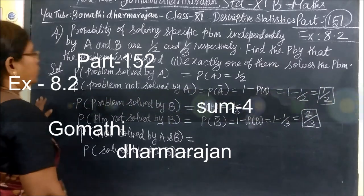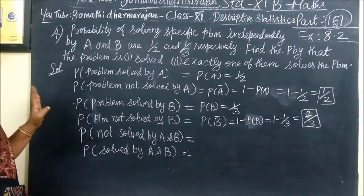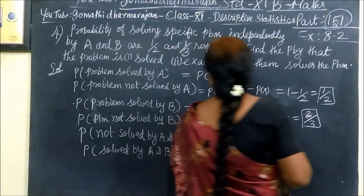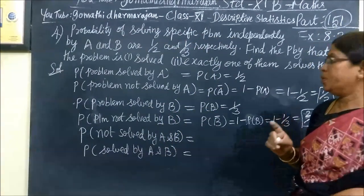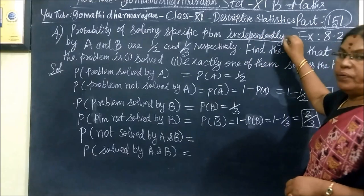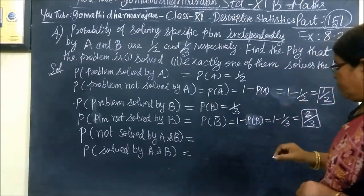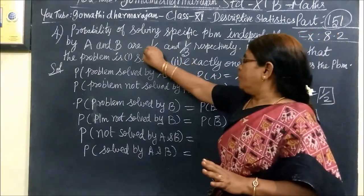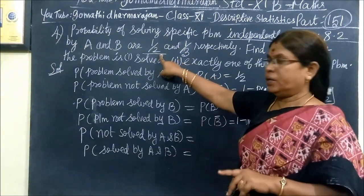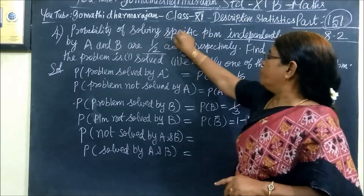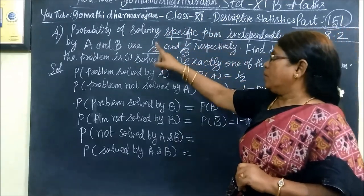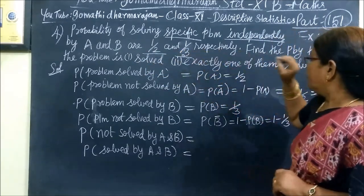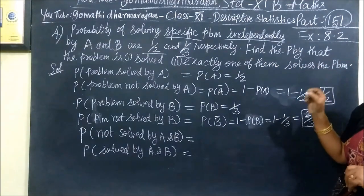This is question number 4. We have given properties for the following specific problems. Independence by A and B, with probabilities 1/2 and 1/3 respectively. We have to prove that the probability is 1/2. We have to find the probability that the problem is solved.